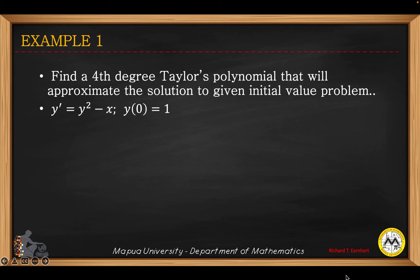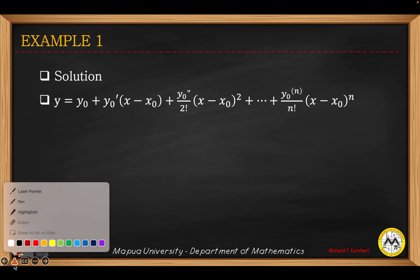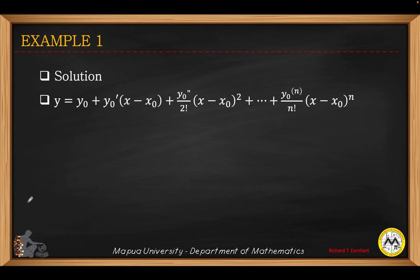Let's have an example. Here we find a fourth-degree Taylor's polynomial that will approximate the solution to a given initial value problem. Our differential equation is y prime equals y squared minus x, and the initial value is: when x equals 0, the value of y equals 1. We'll be using the Taylor's polynomial.